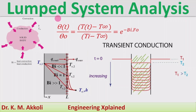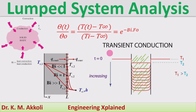Hello everyone, welcome to this session. In this session, I am going to discuss the lumped system analysis of transient heat transfer. In transient or unsteady state heat transfer, the rate of heat transfer changes with respect to time and with respect to position. In the particular case we consider here, the rate of heat transfer varies with respect to time only and not with respect to position. This is called negligible internal temperature gradients, and it is termed as the lumped system analysis.